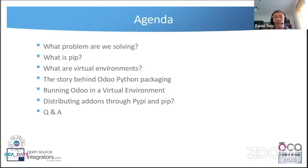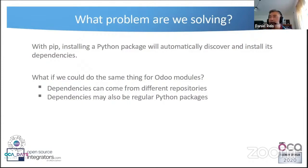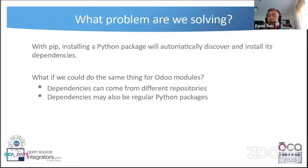What problem are we solving? Python comes with a package installer called pip. It allows you to automatically install a package and discover and install all its dependencies. On Ubuntu or Debian systems you have apt, which resolves dependencies for you. The equivalent of this in the Python world is pip.